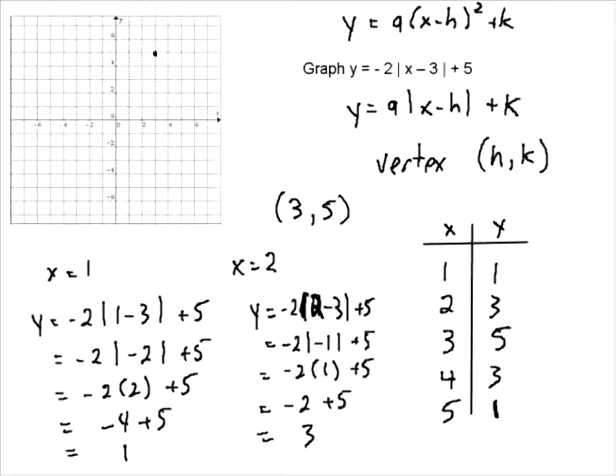So we'll just put the points in. 2, 3 is right here. 1, 1 is right here. 4, 3 is right here. And 5, 1 is right here.